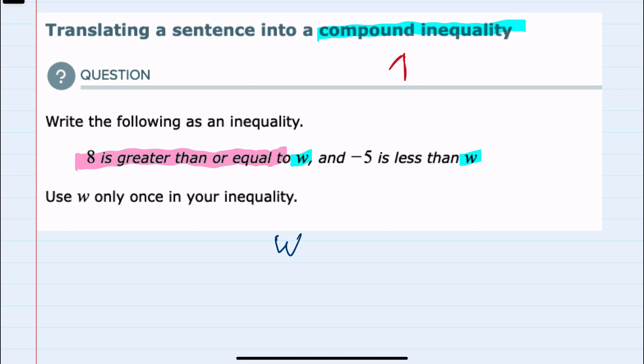Our compound inequality goes from smallest to largest. And since 8 is greater than or equal to w, 8 would be to the right.